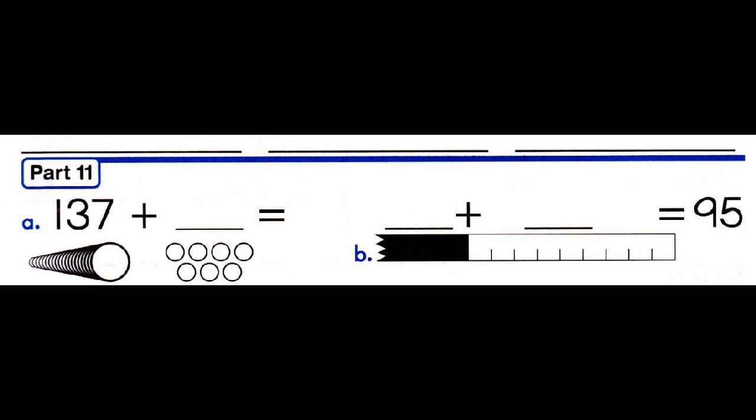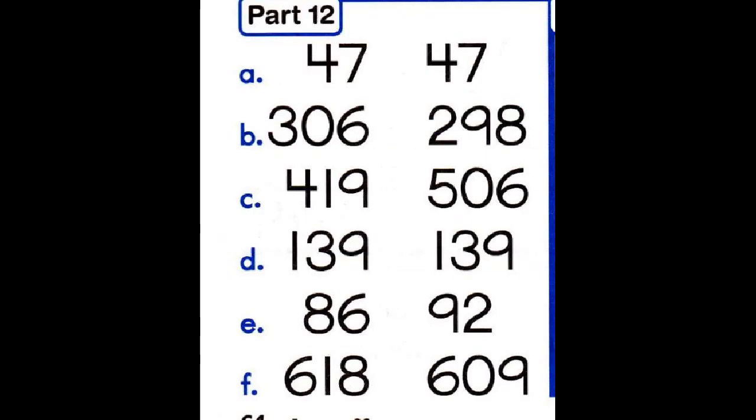Part 11, you have some missing parts and some missing holes. On A, you're going to count your little circles and count up from 137. On B, you need to figure out your parts on the ruler and then count back. Part 12, this is your greater than, less than, or equal. So you're going to make your alligator eat your biggest number. If your two numbers are the same, then you need to write an equal sign. Be careful because they're going to try to trick you.